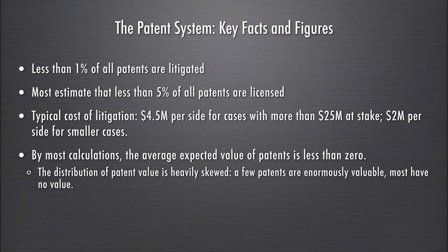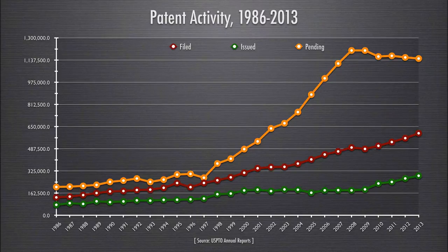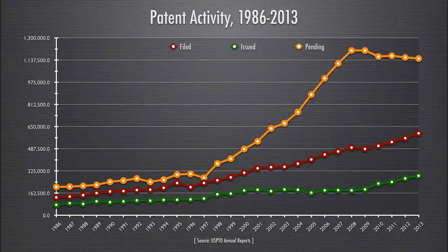One of the puzzles about the patent system is why so many people are getting more patents every year when they seem not particularly valuable individually. One theory is that they are valuable in the aggregate. Patenting activity over the last 20 years shows the number of patent applications filed has outpaced the number of patents issued, resulting in an explosion of pending applications. Only in the last few years has the patent office managed to restrain the growth of pending applications.